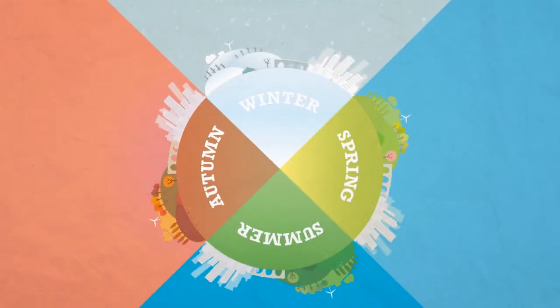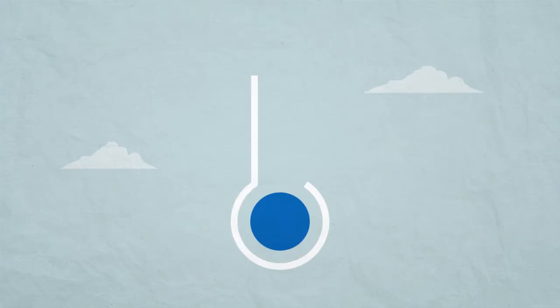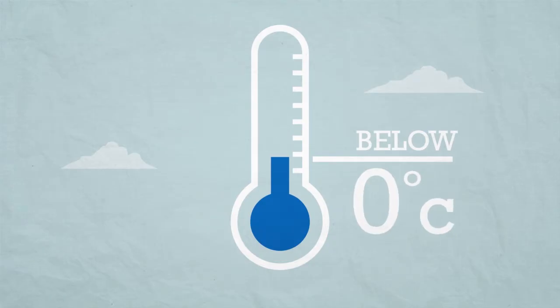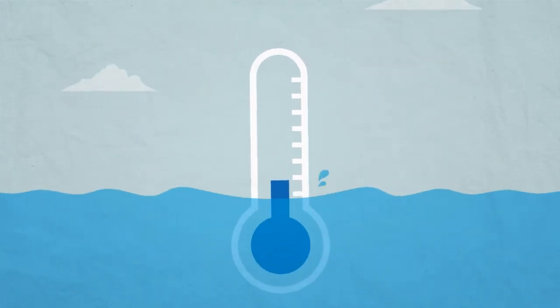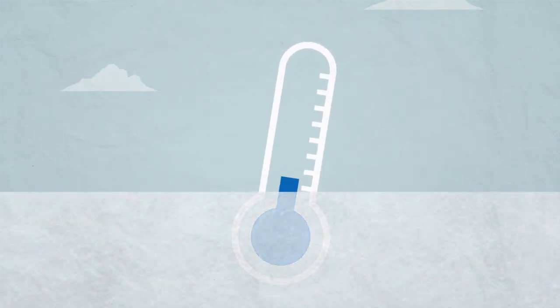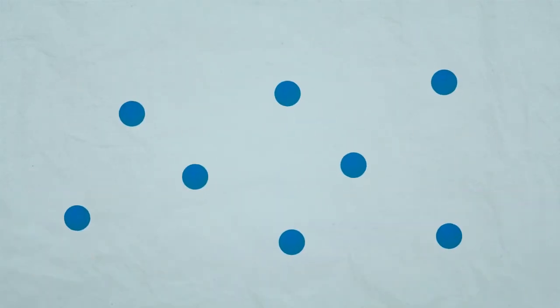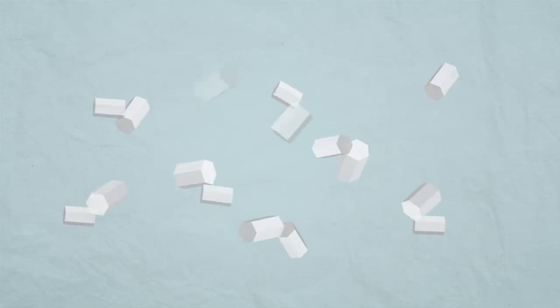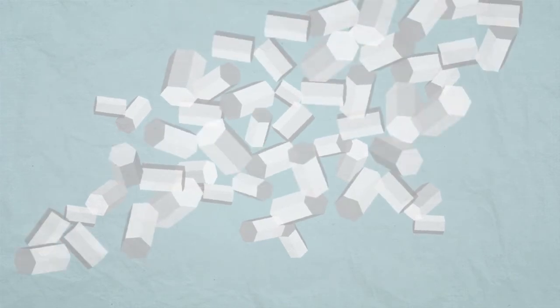Snow usually falls in winter when it is very cold. It forms when the temperature is below zero degrees Celsius, also known as the freezing point of water. This causes very small drops of water in the air to freeze into ice crystals. And when these ice crystals bump into one another, they stick together and form snowflakes.